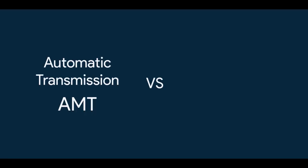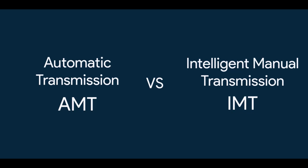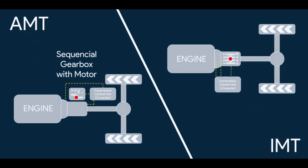First, let's see the difference between AMT and IMT. AMT has sequential gearbox with an electric motor to shift gears. The gear lever you see is just like a joystick to give input to the transmission to shift gears and clutch is automatically operated by computer.